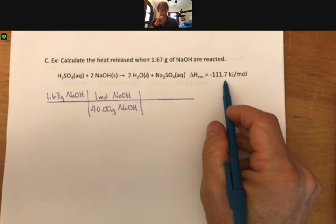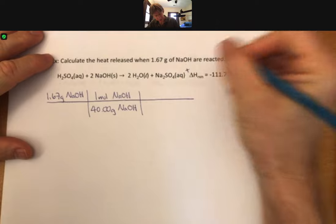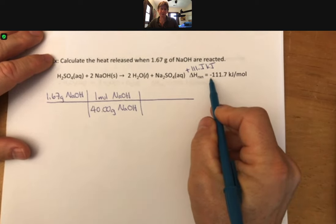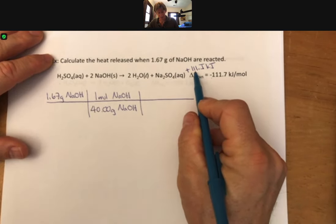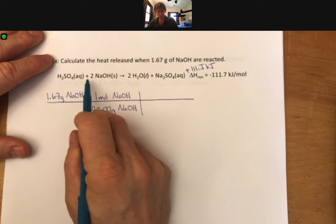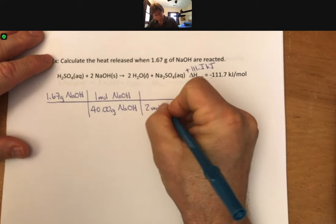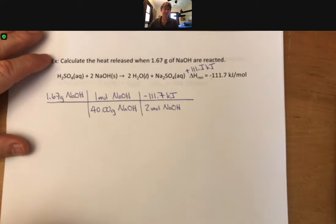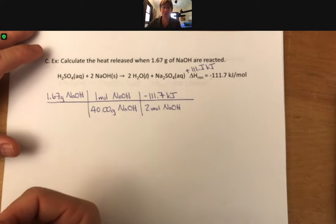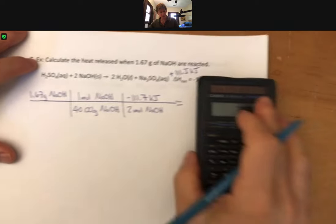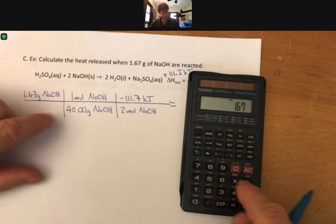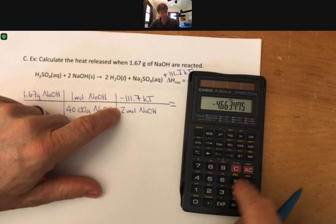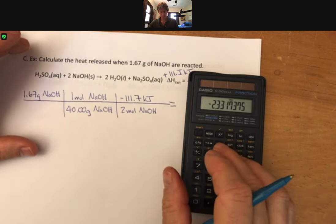Remember, it's per mole, but our process is this is 111.7 kilojoules as a product because it's negative. Then it's going to be this much energy released for every two mole of sodium hydroxide, so it's actually minus 111.7 kilojoules per two moles of sodium hydroxide. That gets us to our heat released again. 1.67 divided by 40 times 111.7 minus, and don't forget to divide by two, minus 2.33.